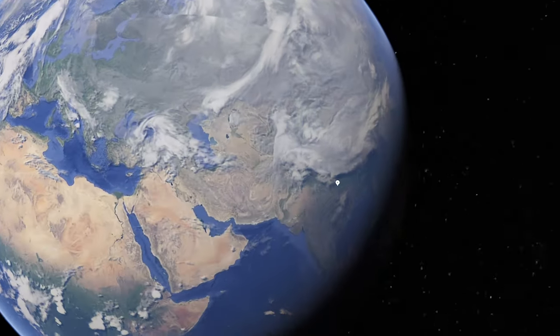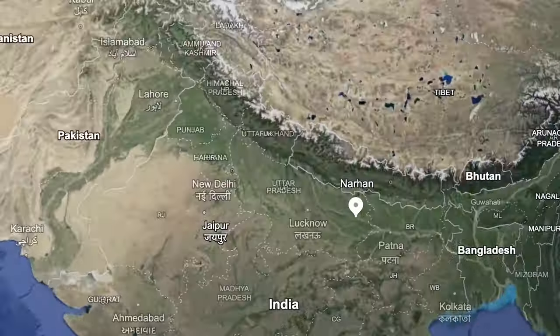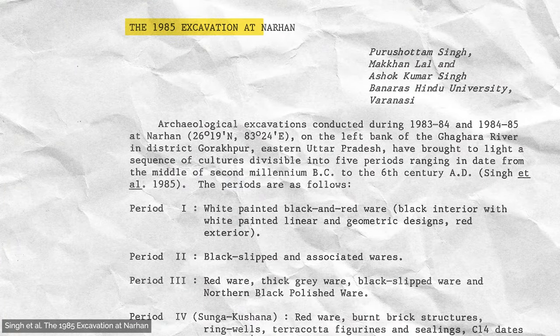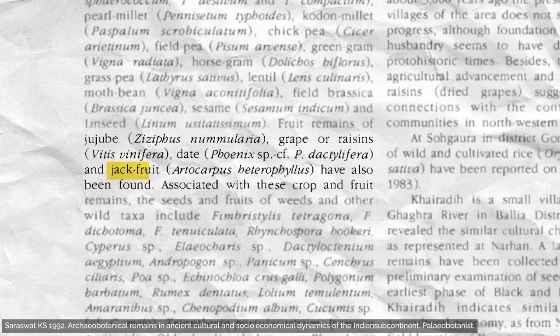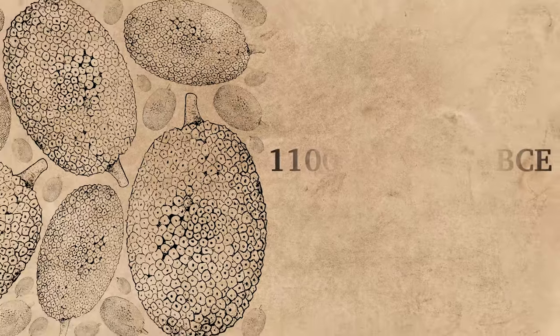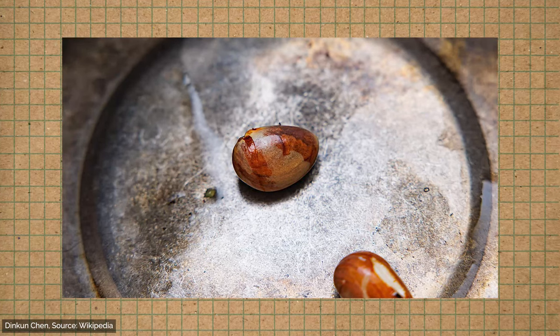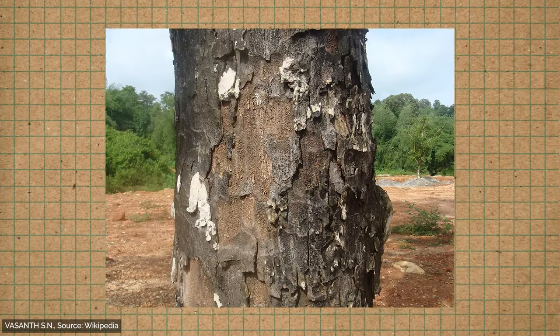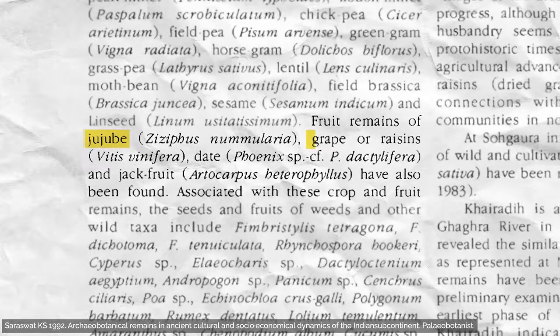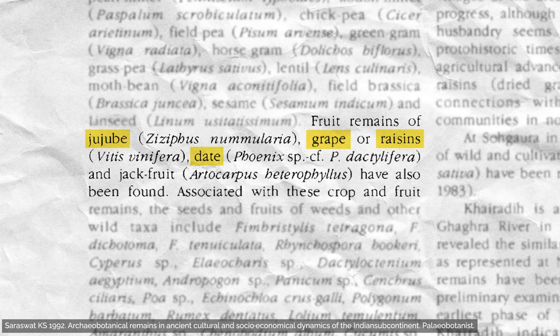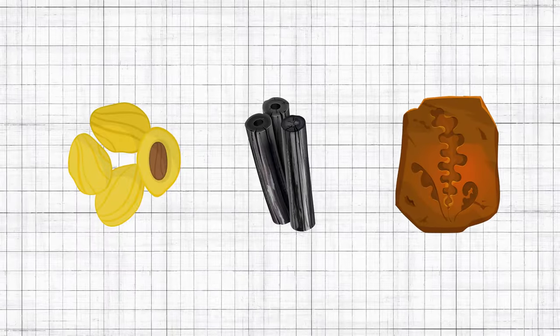Jackfruit-specific archaeological evidence for this theory is limited, but let's look at what we do have. At the small village of Narhan in modern-day Uttar Pradesh, a site was excavated in the 1980s where scholars noted jackfruit remains in the earliest layers of the site. The site date ranges around 1100 BCE to 800 BCE. As with many early archaeobotanical studies, we don't usually get a photograph or detailed description of every remain found, and there were other plants found too. Based on our research, we're not sure if they found seeds, charcoal, or plant impressions — but maybe they'll let us know if they see this video.